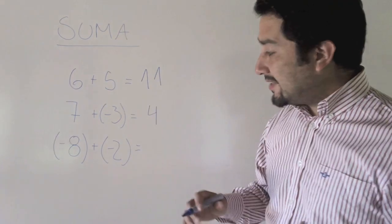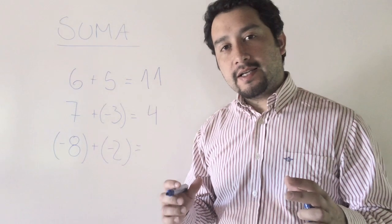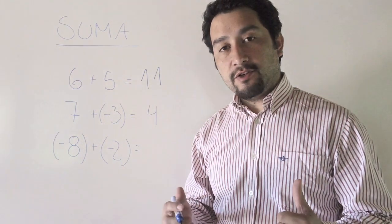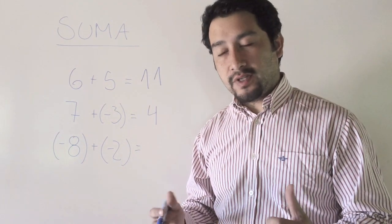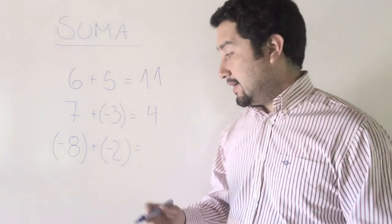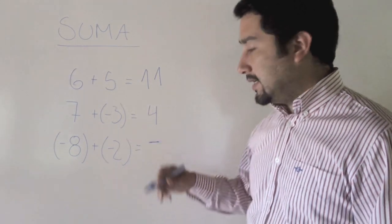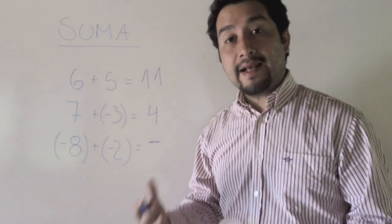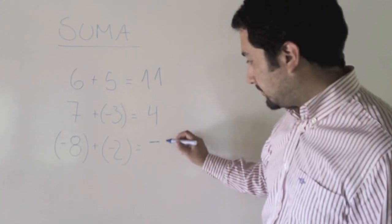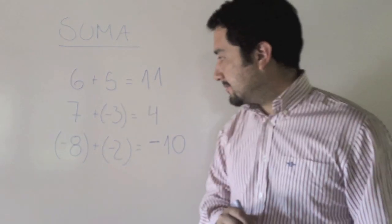En el tercer caso tenemos la suma de dos números que son de signo negativo. Esto es más fácil, porque lo que hacemos es conservar el signo negativo y sumar las cantidades: diez.